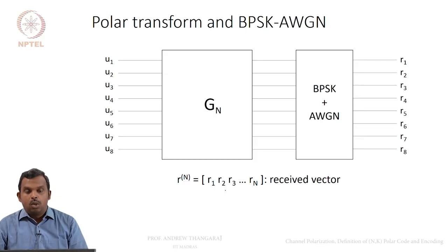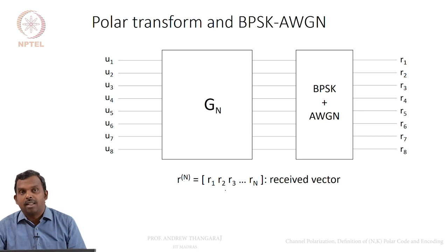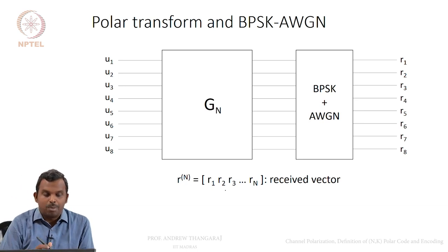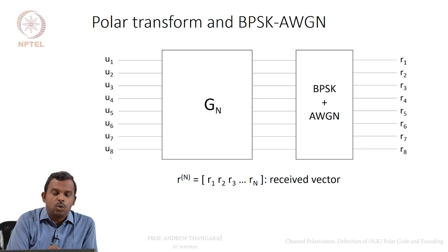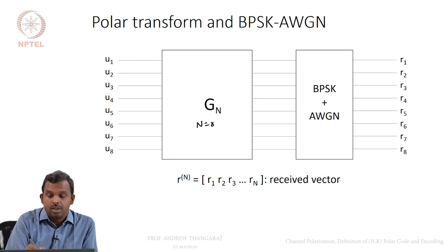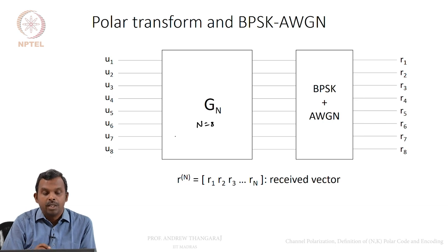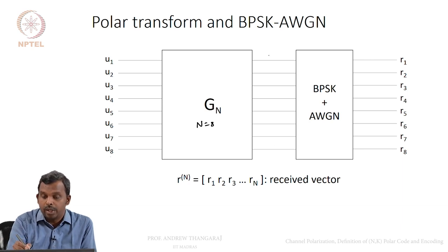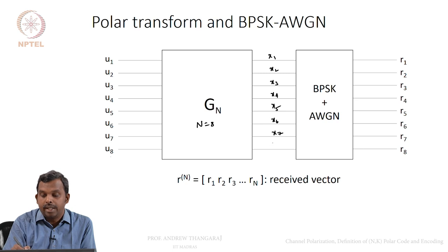Let us look at what happens if you use the polar transform along with a channel. Here is an example with 8 bits — N equals 8 for illustration, but it could be any other N. You have 8 bits coming in, you use the polar transform G8, and you get 8 outputs, which you can denote as X1, X2, X3, X4, X5, X6, X7, X8.